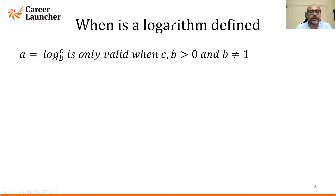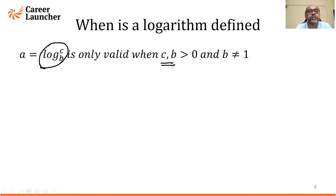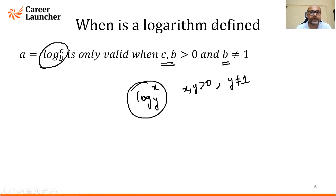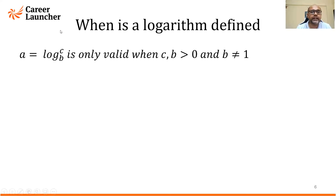Now, when is a logarithm defined? This is very important — there are a lot of traps created in the question paper based on this. Logarithm log C base A is only valid when both numbers are positive, not even zero — they should be strictly positive — and your base cannot be equal to 1. So log X base Y is only valid if both numbers are positive and the base is not equal to 1. Otherwise it becomes invalid. There are many traps that can lead you to wrong answers if you don't remember this.